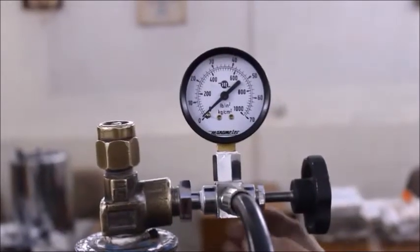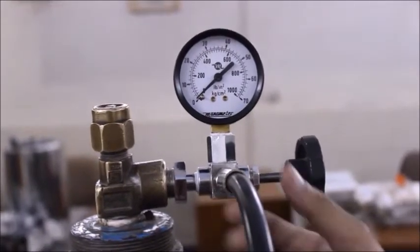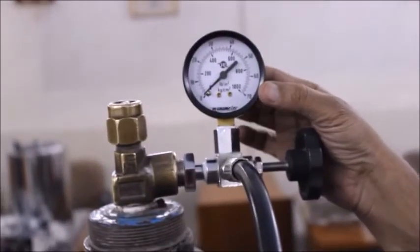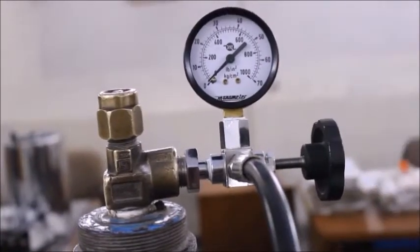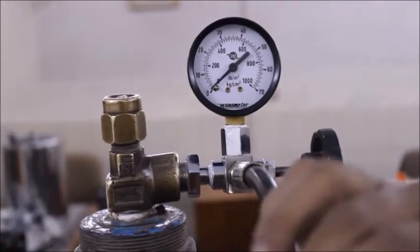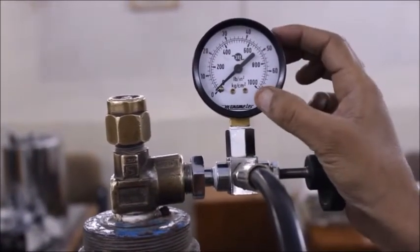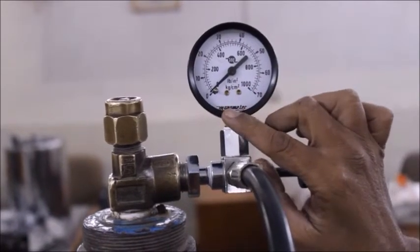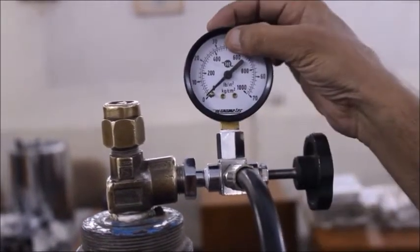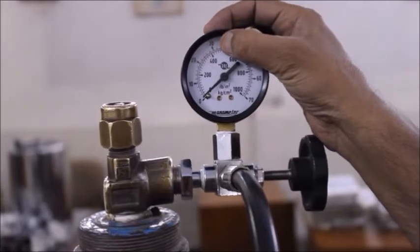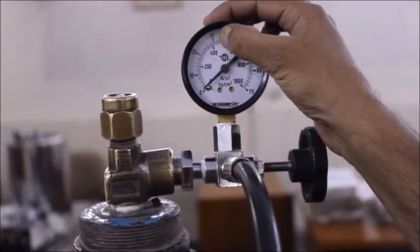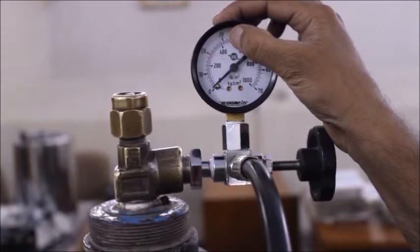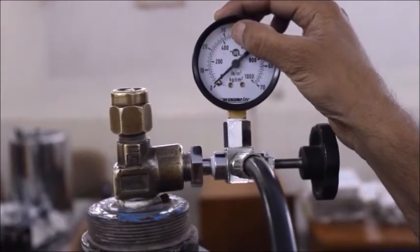We will now fill the combustion bomb with oxygen using the oxygen cylinder. This is the valve used to release oxygen attached to an oxygen gas pipe. This dial is the pressure gauge and we must make sure that the pressure does not exceed 30 kgs per cm2. The pressure inside the combustion bomb should be maintained at 30 kg per cm2.